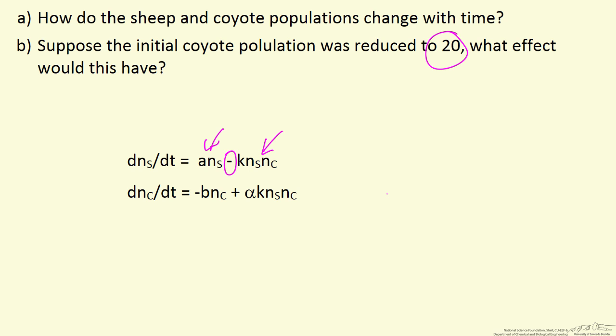as we have more sheep, the number of sheep will start decreasing faster. It also says as we have more coyotes, the number of sheep will decrease faster.